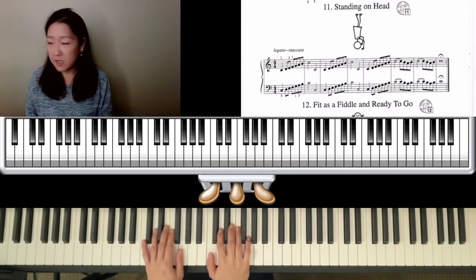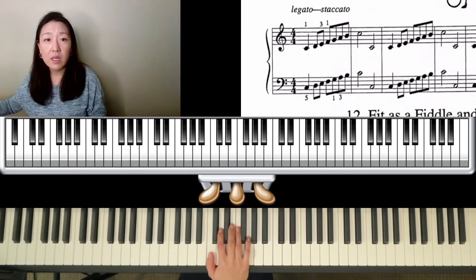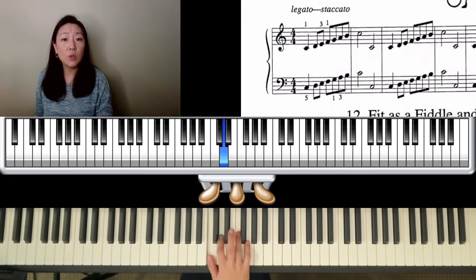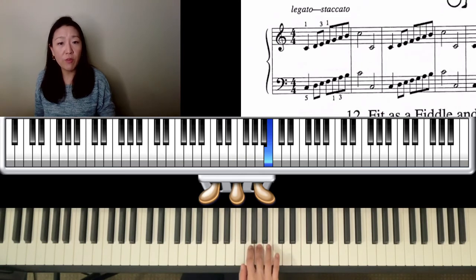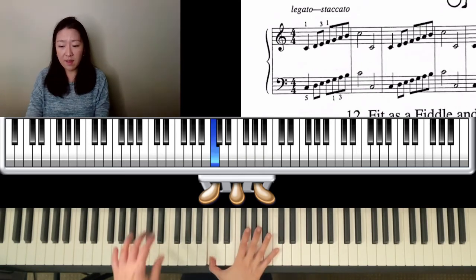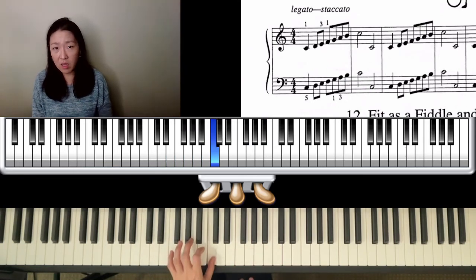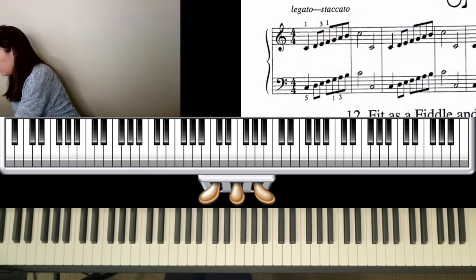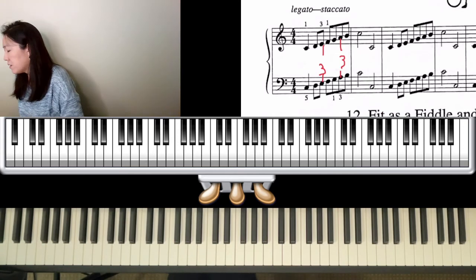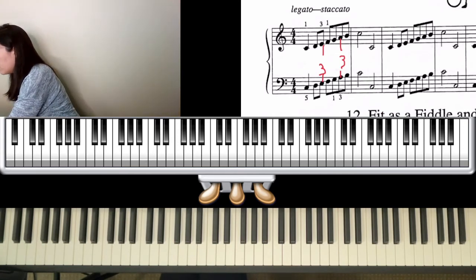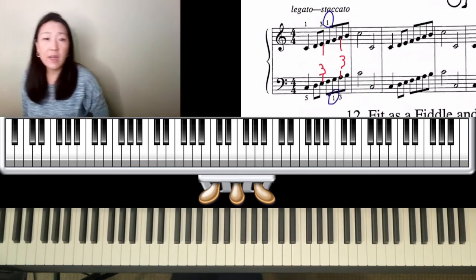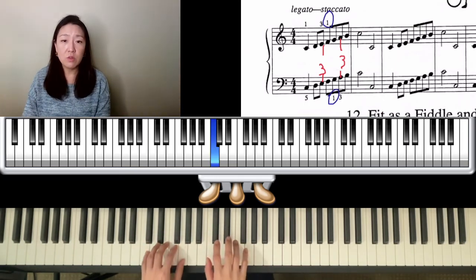Standing on the Head - I cannot do that in real life. This is a little more challenging because of the scale fingering. Right hand is one-two-three-one-two-three-four-five, and left hand is five-four-three-two-one-three-two-one. We have opposing thumbs so they're not exactly aligned, though the threes are aligned. The thumbs are in different places, so you might have to do it extra slow at first.